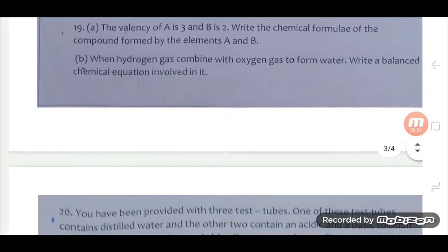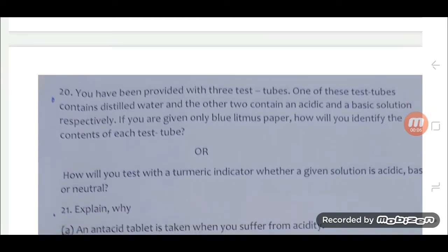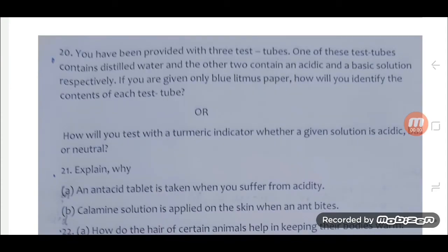20. You have been provided with 3 test tubes. One of these test tubes contain distilled water and the other two contains an acidic and a basic solution respectively. If you are given only blue litmus paper, how will you identify the contents of each test tube?